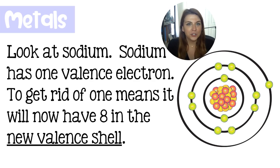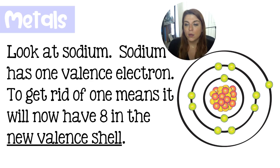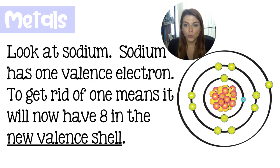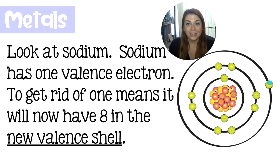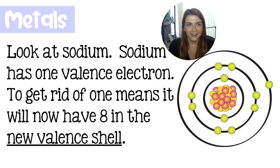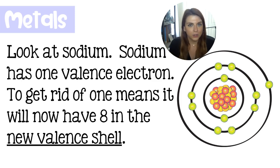We are going to look at sodium as an example of what metals do in order to get their eight valence electrons. So here we have sodium with 11 protons, 12 neutrons, 11 total electrons, and three principal energy levels. That last electron is in the third principal energy level. If it were to ditch this 11th electron and only have 10, then its new valence shell — which would be level two — would have eight valence electrons, and then it would look like neon. So sodium is going to go out on a mission to try to get rid of this electron so it looks like neon.